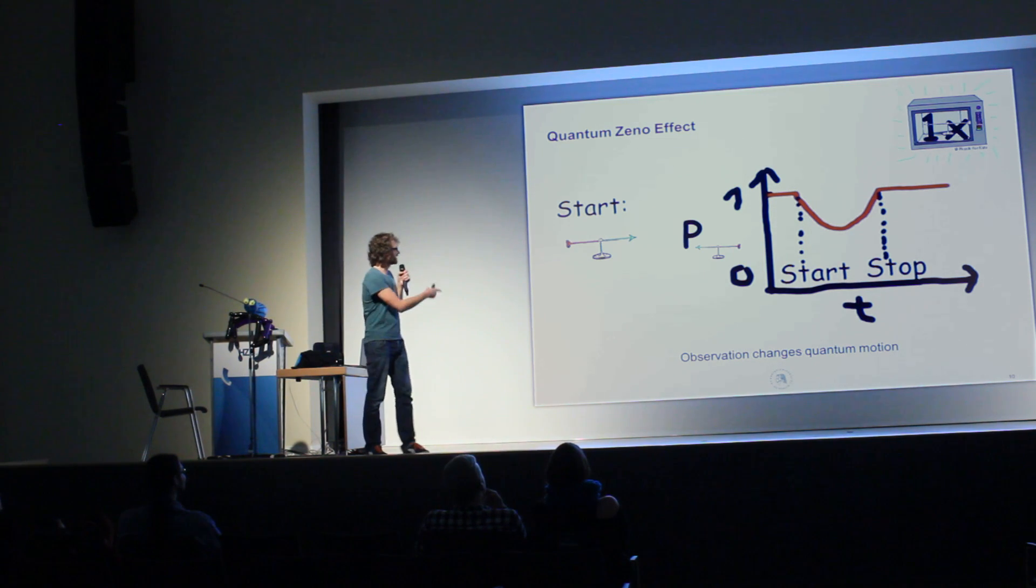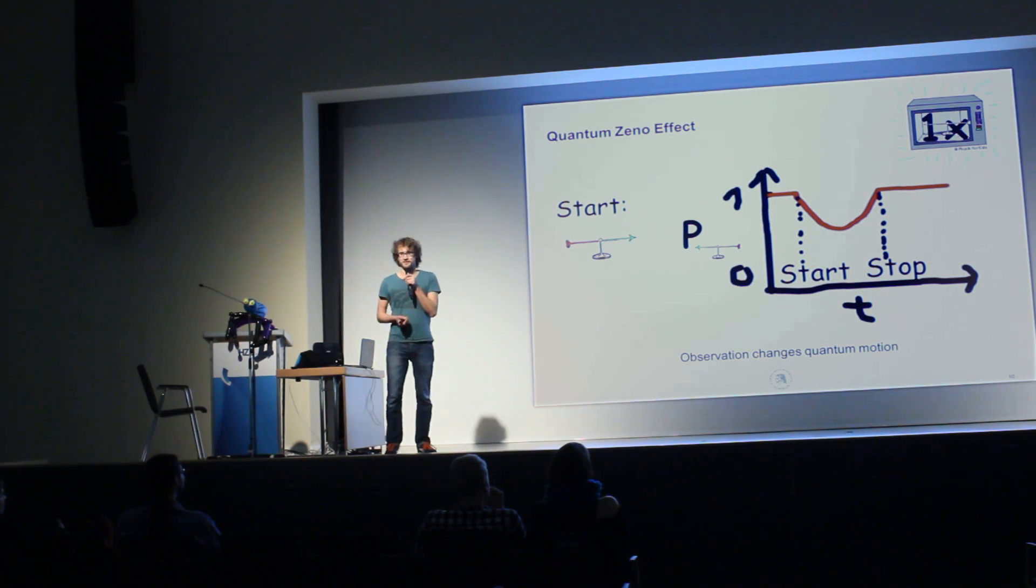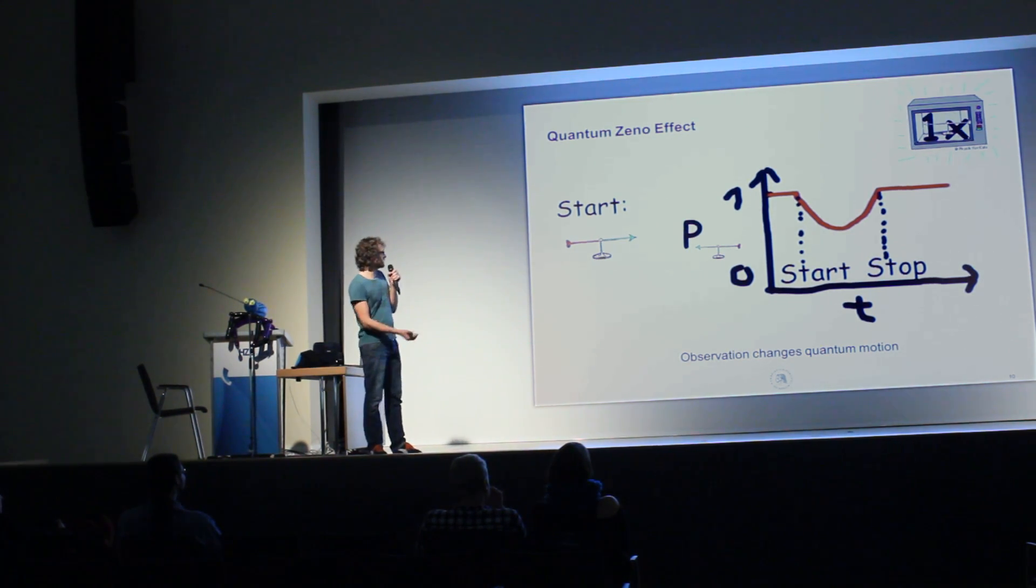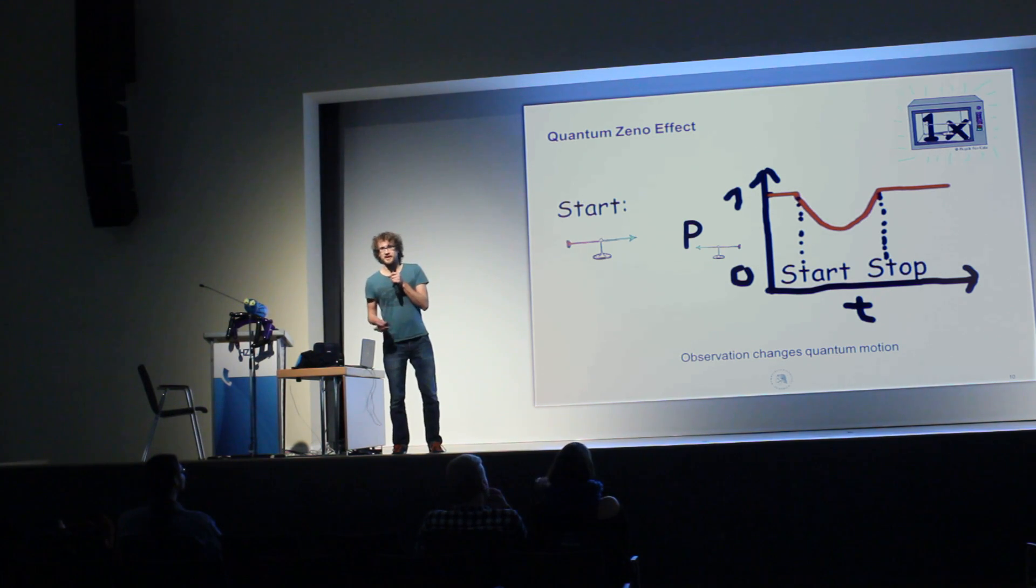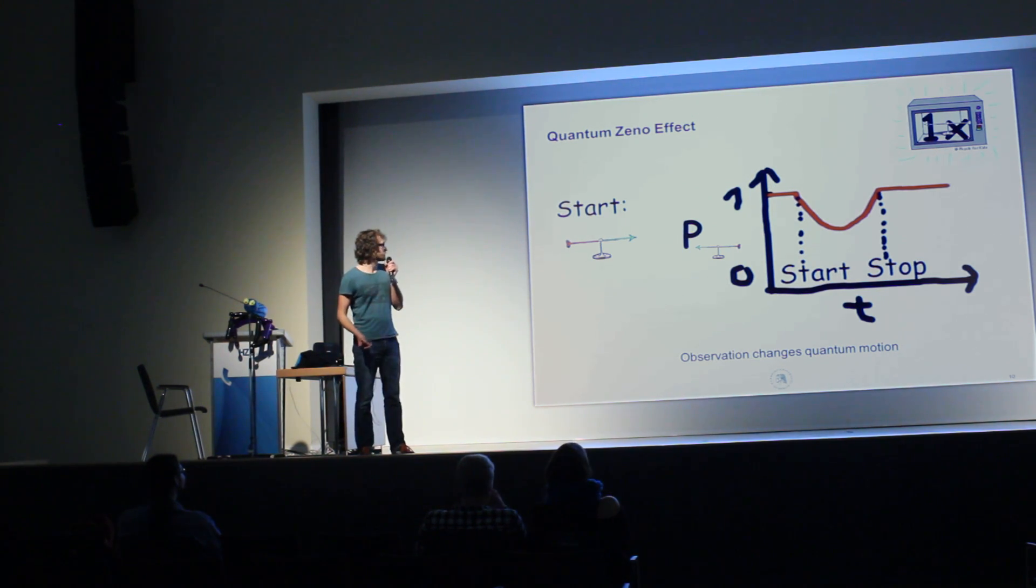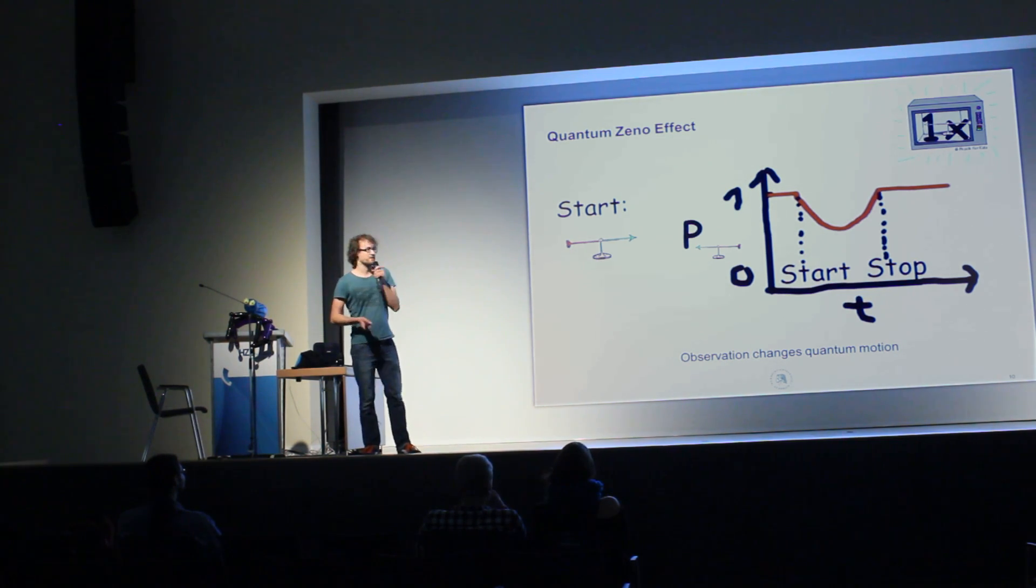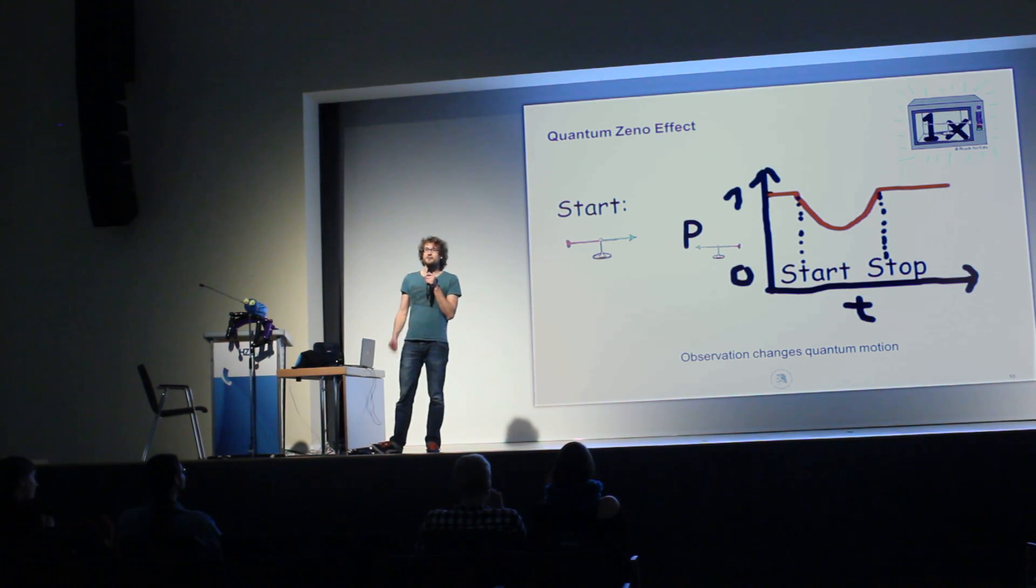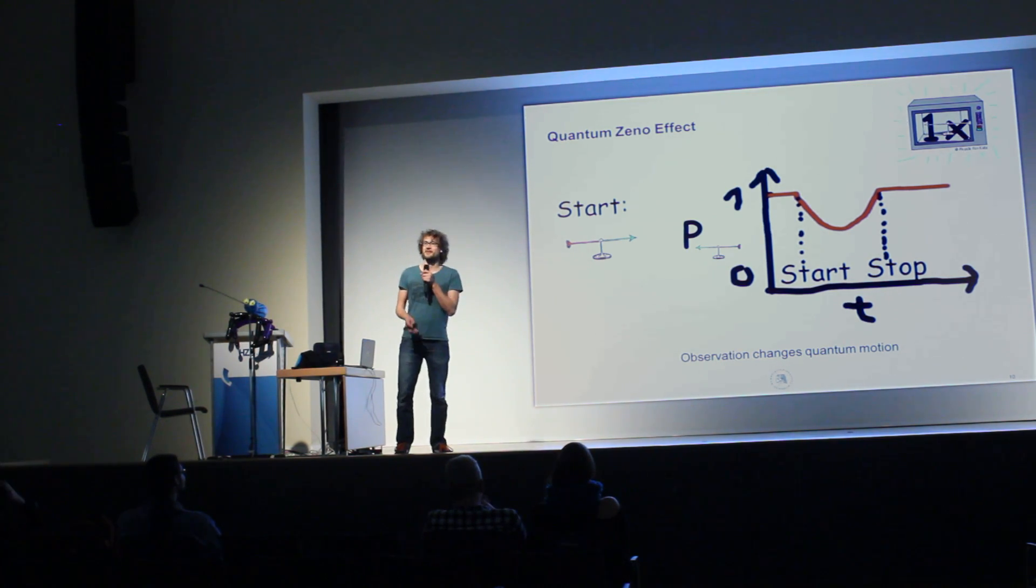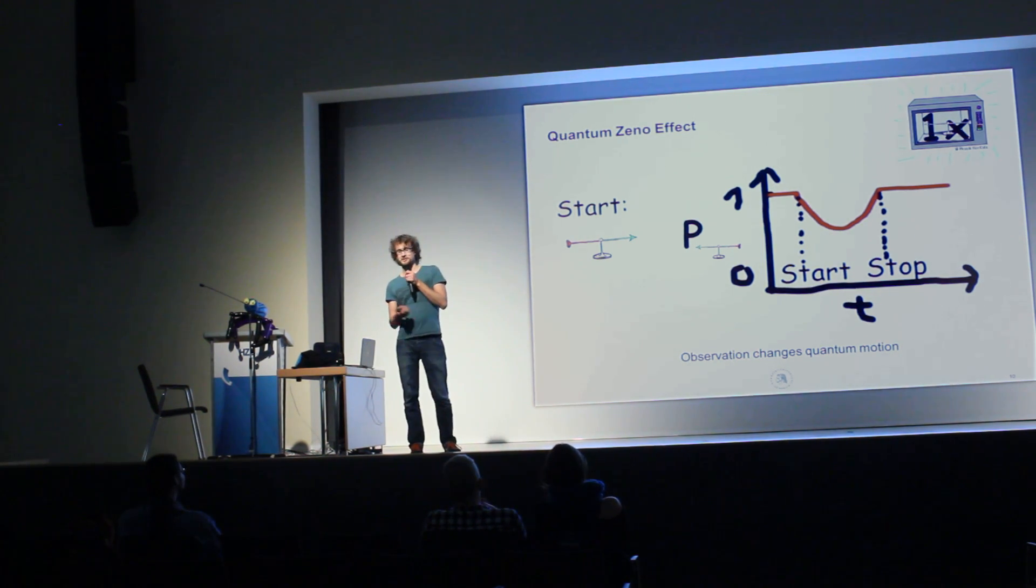When you observe the spin here at short times t, when the microwave didn't start to work, so before the microwave is turned on, you look at the spin, nothing happens, so the probability for the spin to point to the left side is unity after the experiment. Similar, when you look at the spin after the microwave already stopped, then you influence nothing, and the spin will point to the left with 100% probability. Interesting is the case when you look at the spin during the microwave operation. And that depends, for example, when you look exactly in the middle of the microwave on time, then you can inhibit the flip of the spin with 50% probability. So only in 50% of the cases, the spin will point to the left side. And this simply by observing it during the flip.